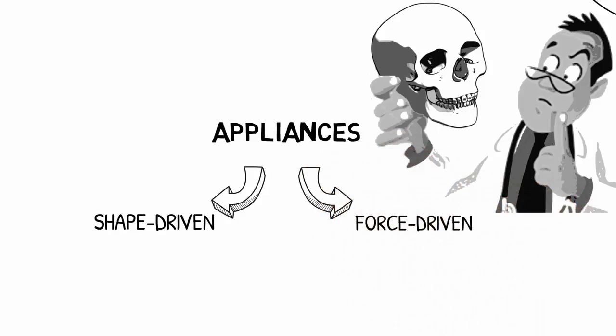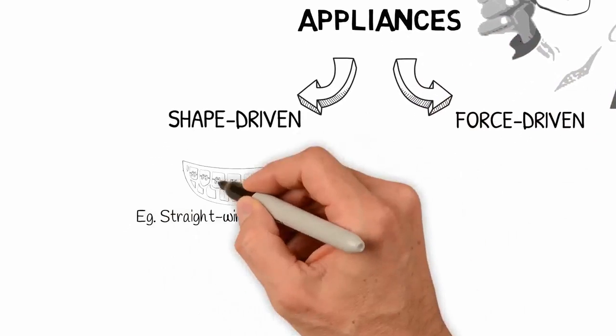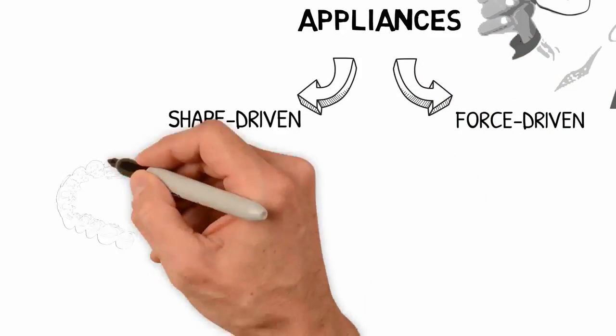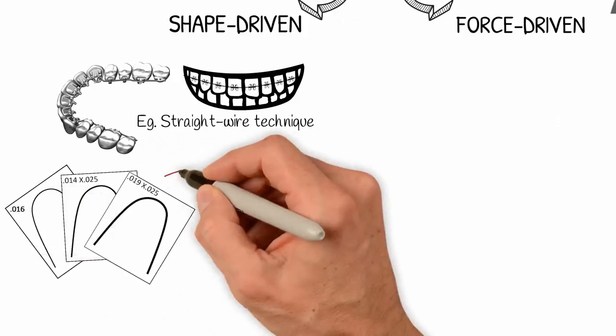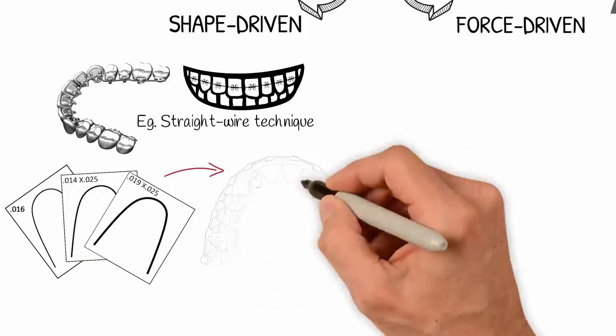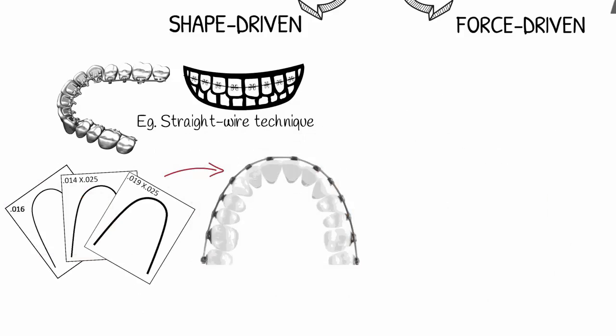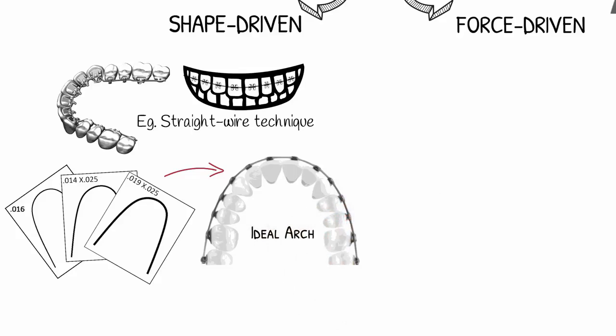As examples of appliances that are shape-driven, we can mention any straight wire technique, both the conventional and lingual ones, in which a series of wires is used with the target of achieving a final arch wire whose shape would be ideal for the correction of the problem. Currently, many techniques seek to reach this final ideal form in a fast way and with as few bends as possible.